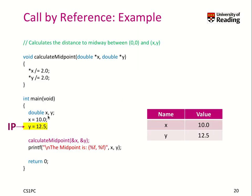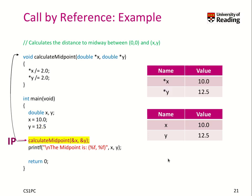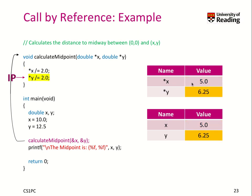Here we can see how they are used. In main, let's assume we have two variables, x and y, with values 10 and 12.5. We initialize them and then call calculate midpoint, passing pointers that point to x and y. Initially those values will be 10 and 12.5. When we divide x by 2 in that line, the x visible to calculate midpoint becomes 5, but also the variable x in our main function has changed its value to 5. Then we do y divided by 2 — whatever calculate midpoint sees is now 6.25, and so is the value in main.